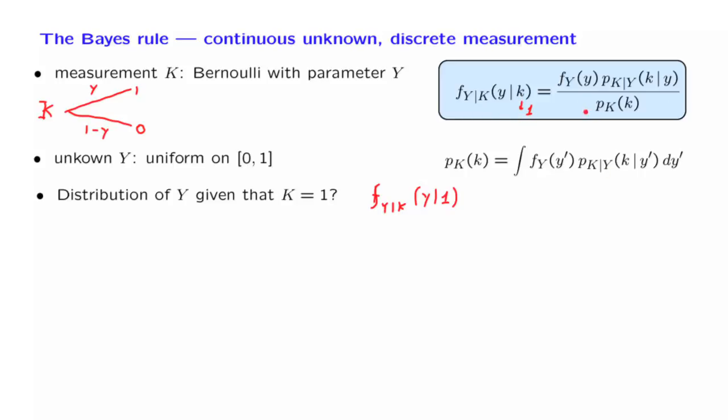So let us calculate the various pieces on the right hand side of this equation. The first piece is the density of y. This is the prior density before we obtain any measurement. And since the random variable is uniform, this is equal to 1 for y in the unit interval, and of course, it is 0 otherwise.